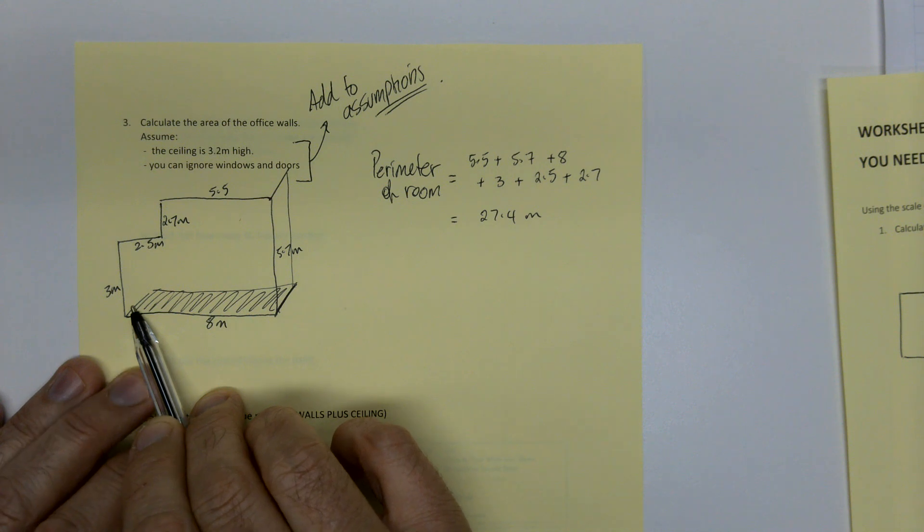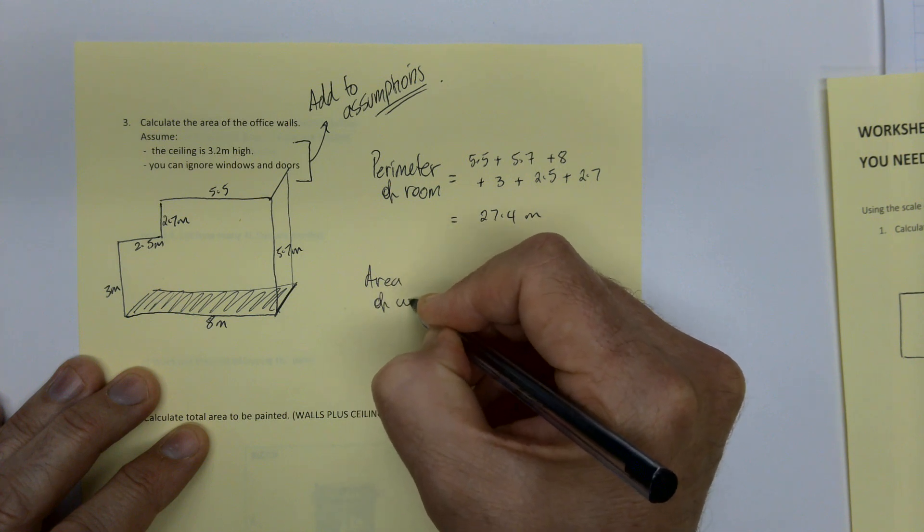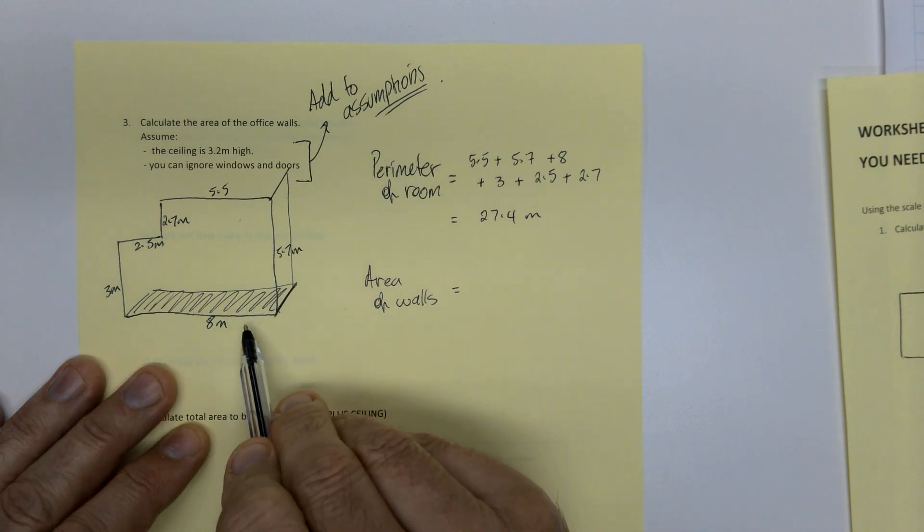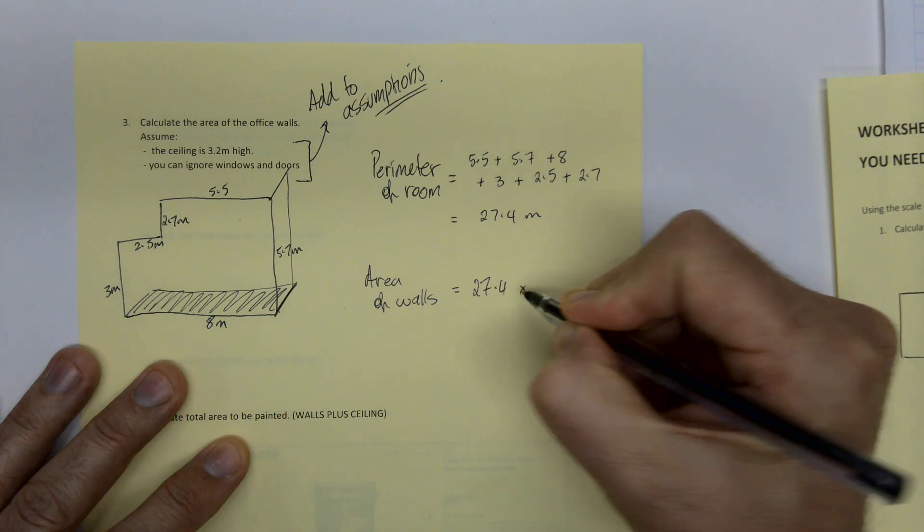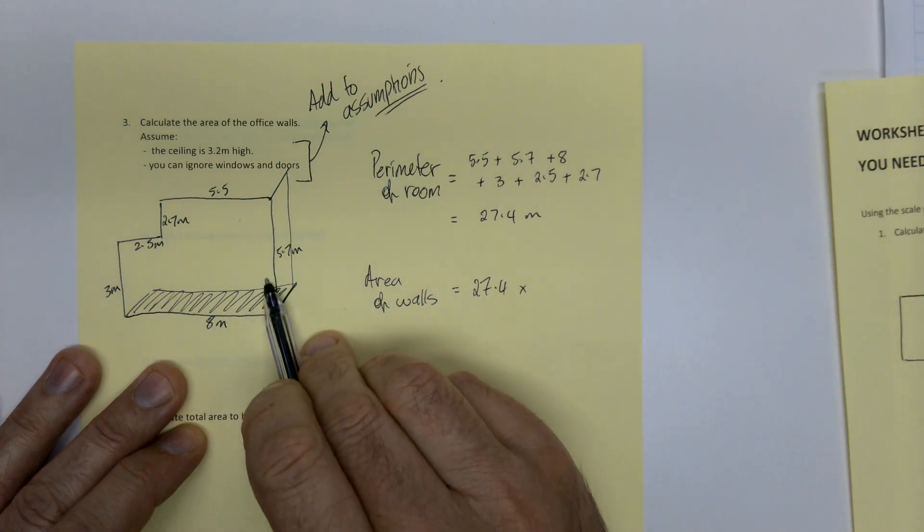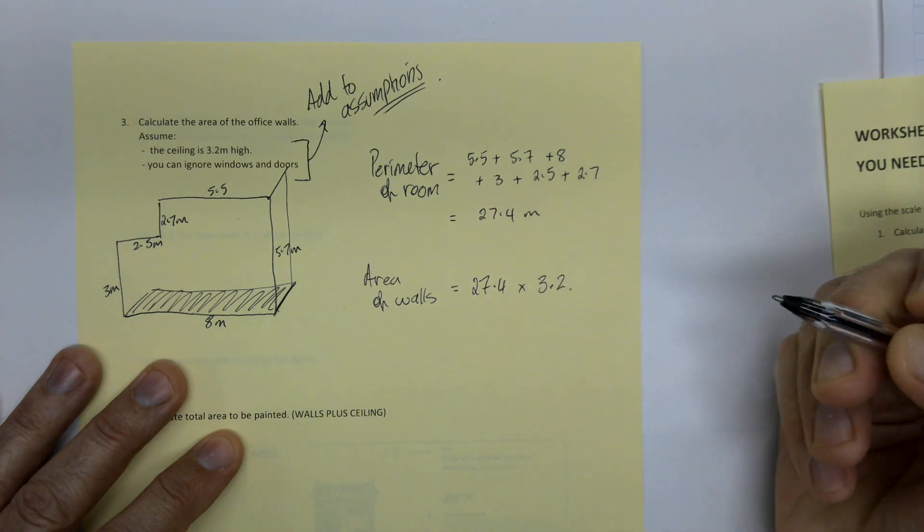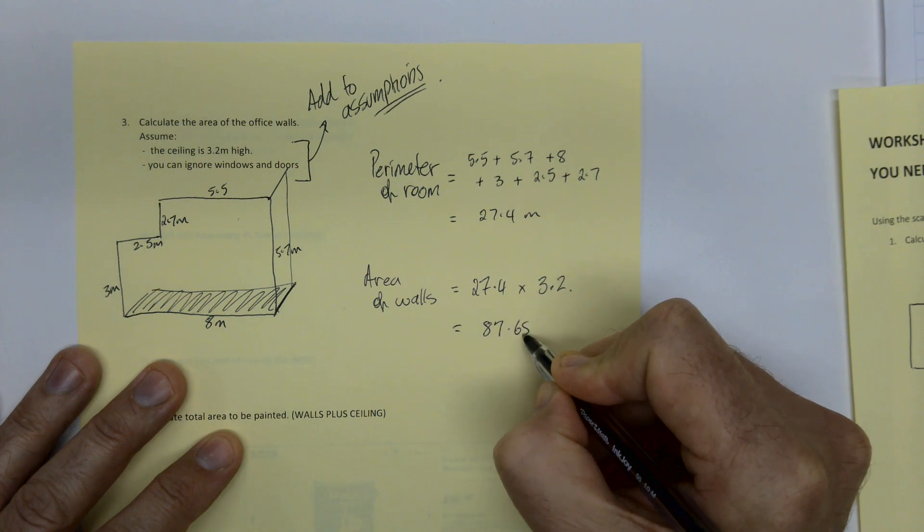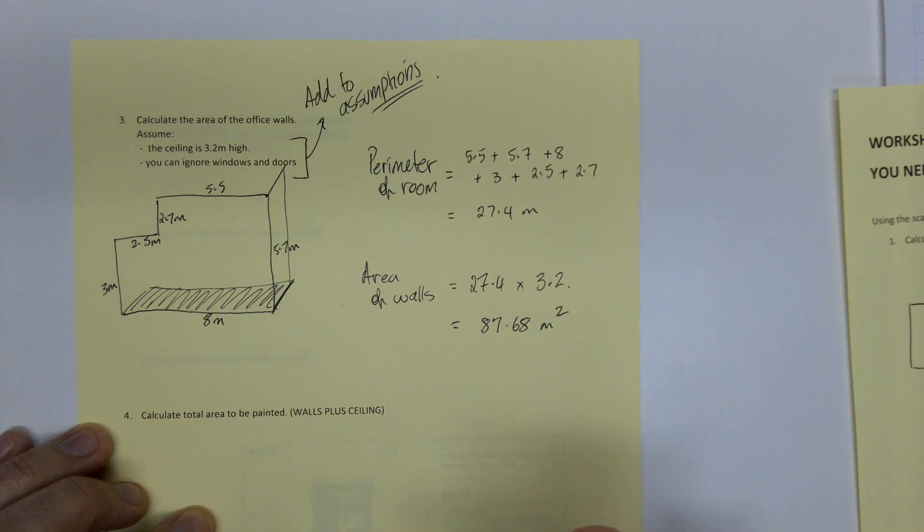But now we need the area of the walls. So we're going up three-dimensional now. Area of walls. This is not the area of the floor. This is the area of the walls. You need to actually really tell the reader what you're actually doing here. So it's that length around the bottom times the vertical bit. So it's 27.4 times 3.2. I'm going to crunch that out. And you've got 87.68 meters squared. So that's just the walls.